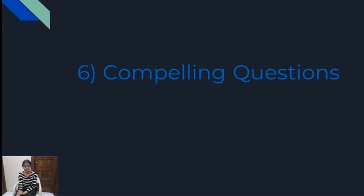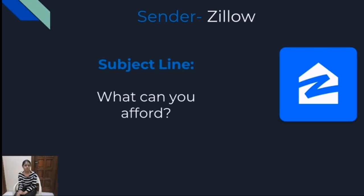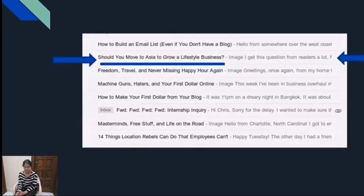Another type of subject line includes compelling questions. You can throw a question in your subject line. There is an example by Zillow, which is a website where apartments are available for rent. The kind of subject line they used was: 'What can you afford?' They didn't pitch any kind of sale or say 'check out the apartments' — they just asked what can you afford. People are curious about what they are talking about, so they click the email. Compelling questions create a great impact. Similarly, you can add compelling questions in your subject line. Another example is: 'Should you move to Asia to grow a lifestyle business?' I would be intrigued to know why they are recommending moving to Asia and I would immediately click on this.